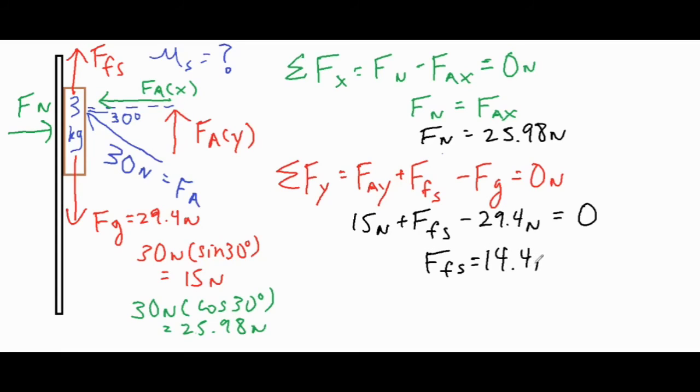When you want to solve for a force of friction, it's always the coefficient of static friction times the normal force, and it turns out we do have the normal force - it's 25.98 newtons times the coefficient of static friction. Divide both sides by 25.98, and that gives us a coefficient of static friction of 0.55.